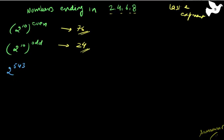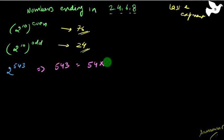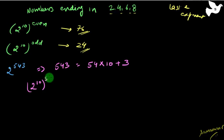Let us take an example. I have 2 raised to the power 253,543. Now this I can write by expressing 543 as some multiple of 10 plus a remainder — that is 54×10 + 3. So when I open this I will get 2 raised to the power 10, raised to the power 54, multiplied by 2 raised to the power 3.